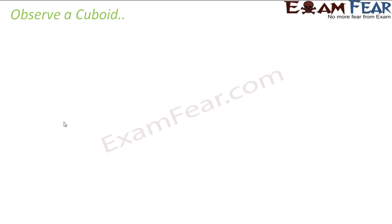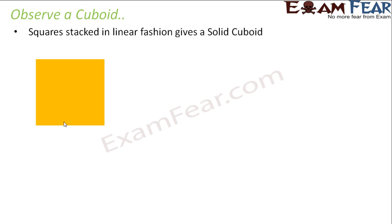So let us first observe a cuboid. So what is a cuboid? How does it look like? A cuboid generally doesn't have all the sides equal, so it will have rectangular faces. Now if I ask you to make a cuboid, how can you make a cuboid? Can you think of any option of making a cuboid?